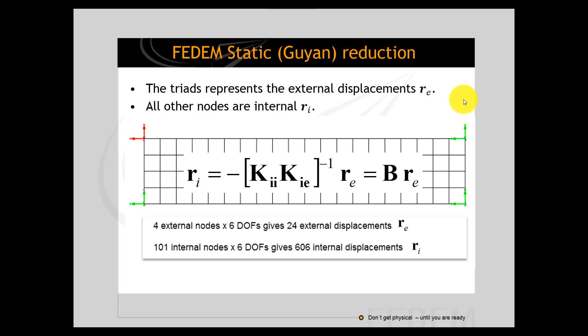In this small example we see that we have initially 630 degrees of freedom, that means unknowns or equations, and after the static model reduction when we are using only four triads we have 4 times 6, we have 24 external displacements stored in the R_E vector, which is a major reduction in model size and computation time.